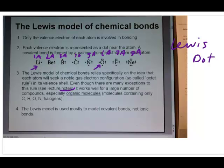I point out here in the lecture slide that this particular model works very well for a large number of compounds, especially organic compounds, or organic molecules. That is, molecules that contain only carbon, hydrogen, oxygen, nitrogen, and halogens. As you note here, if you look carefully, most of these are second period elements, and there's a reason why they work so well for second period elements, which we will discuss in the next video.